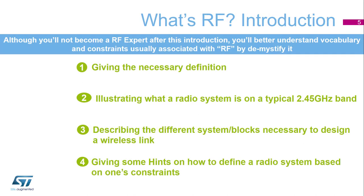Although you will not become an RF expert after this introduction, you will better understand vocabulary and constraints usually associated with RF by demystifying it. This session gives you the necessary definitions, illustrating what a radio system is on a typical 2.4 GHz band, describing the different system blocks necessary to design a wireless link, and giving some hints on how to define a radio system based on one's constraints.